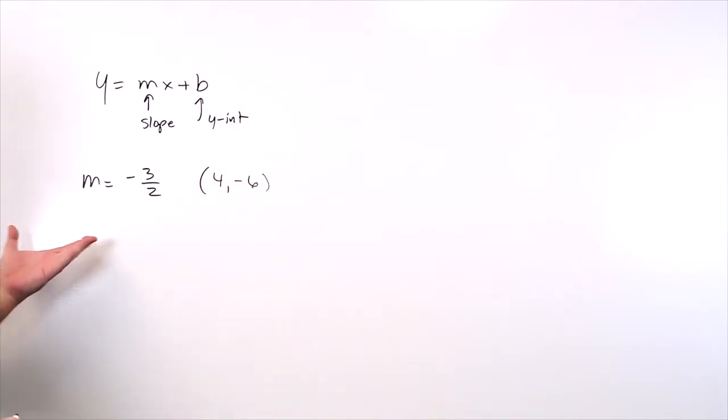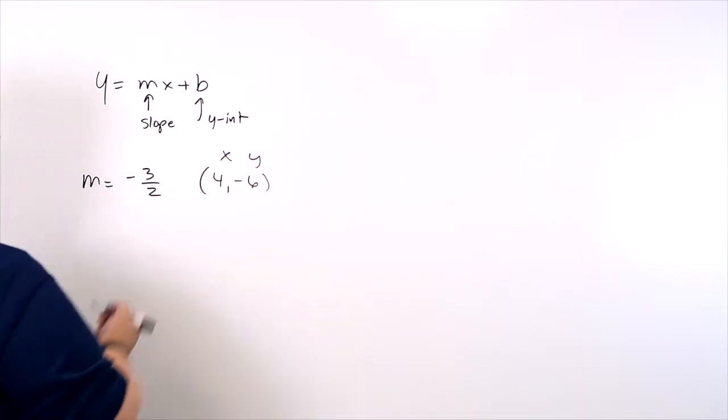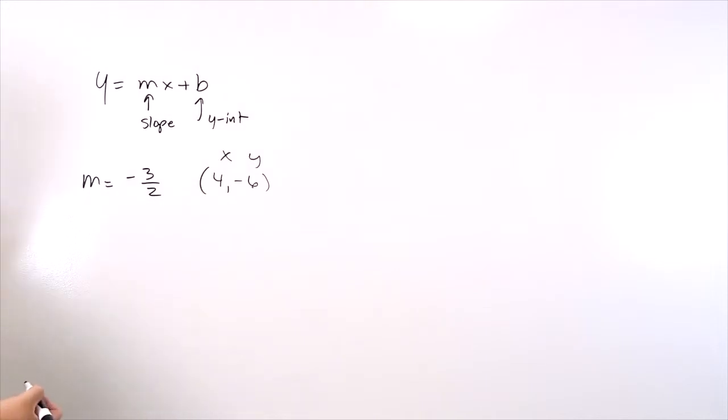Okay, and so you have this information, the slope and this point. How do you put it into your formula here? Well, this is x and y. It's an ordered pair.